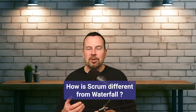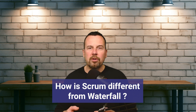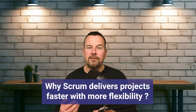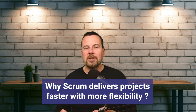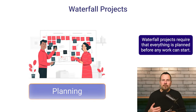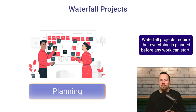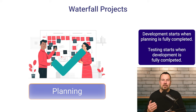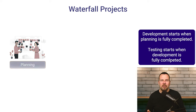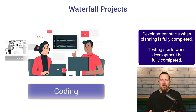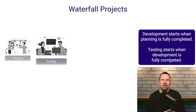After hearing all this, you might be wondering how Scrum is different from traditional waterfall project management and why it can deliver projects faster with more flexibility. Waterfall projects require that everything be planned ahead of any development work. After planning is fully completed, development starts, and when development is completed, testing kicks in and bugs and defects are resolved.